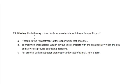Which of the following is least likely a characteristic of internal rate of return? Option A: it assumes reinvestment at the opportunity cost of capital. Option B: to maximize shareholders' wealth, always select projects with the greatest NPV when the IRR and NPV rules provide conflicting decisions. Option C: for projects with IRR greater than the opportunity cost of capital, NPV is 0.